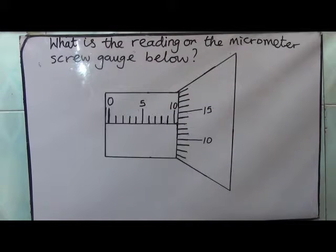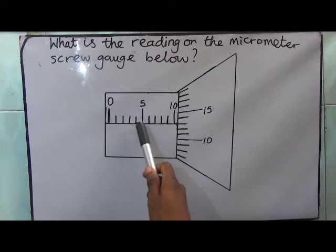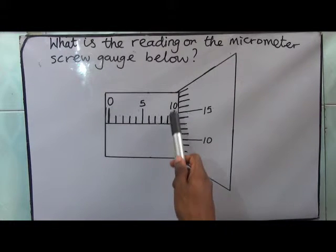This is the second example below. The same process, this is 0mm, 1, 2, 3, 4, 5, 6, 7, 8, 9, 10, this is 10mm.